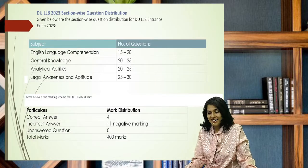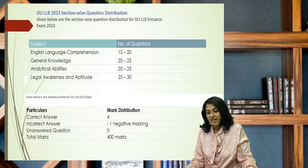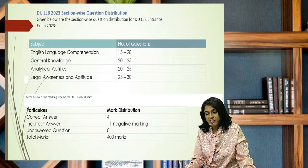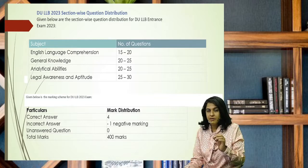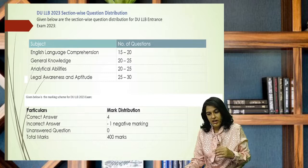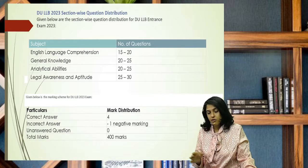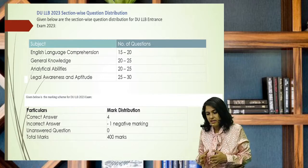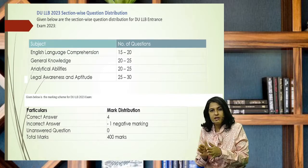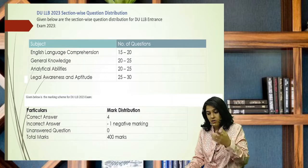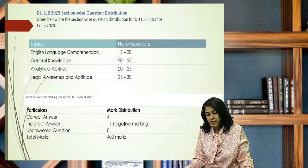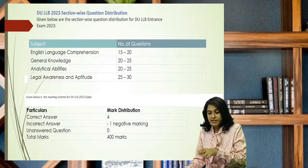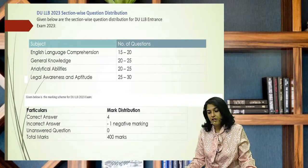Let's understand the section-wise distribution of marks. They have four sections here: English language, general knowledge, analytical abilities, legal awareness and aptitude. Now we are going to talk about analytical abilities in more detail because I need to highlight something. The number of questions is variable every year. It's not like 20 marks for English or 30 marks for law. I've just given you a bracket - it varies within this bracket. 15 to 20 for English, 20 to 25 is general knowledge, 20 to 25 is analytical ability, 25 to 30 is legal awareness and aptitude. So legal awareness and aptitude has the highest weightage here, 25 to 30.